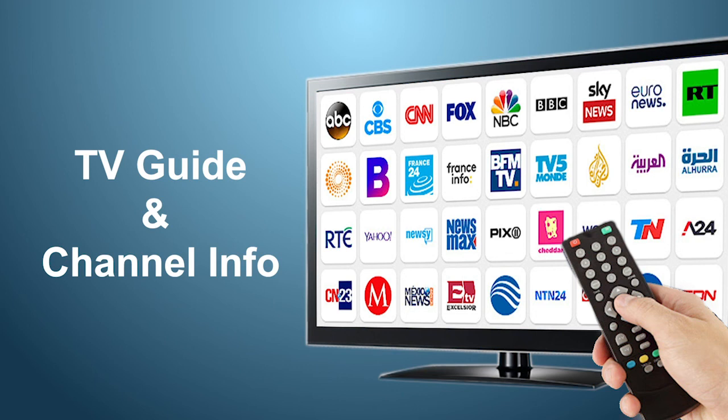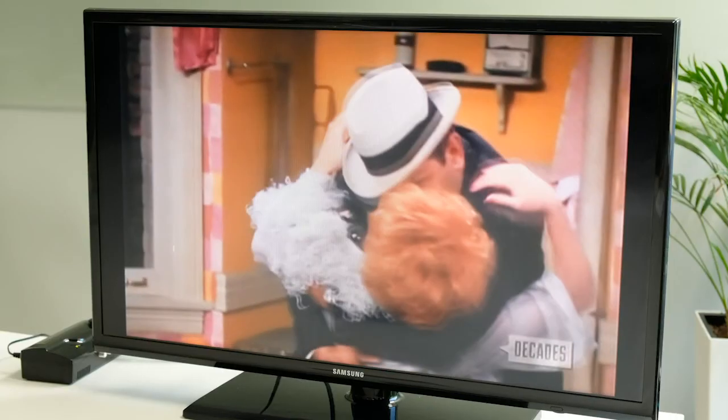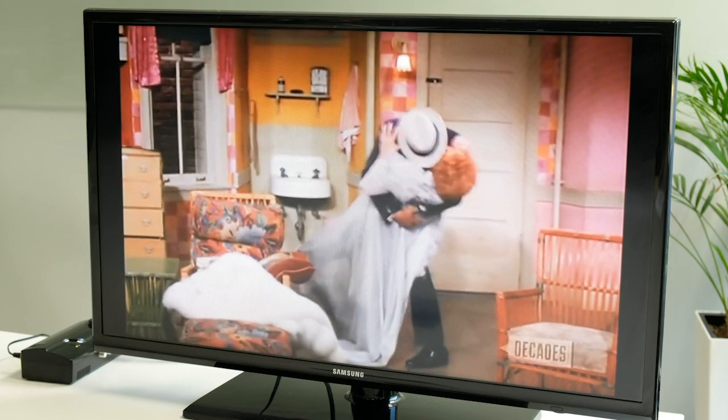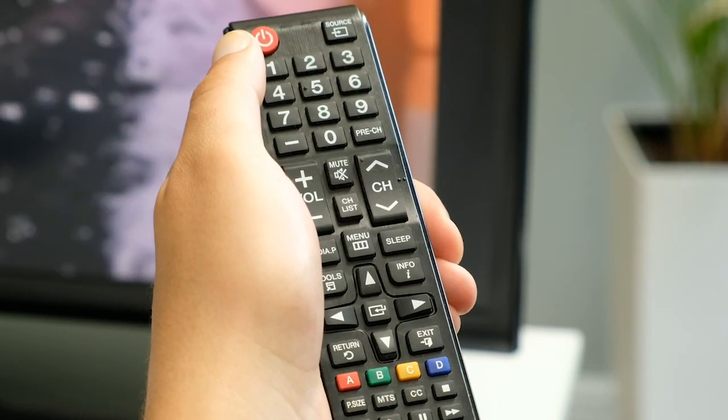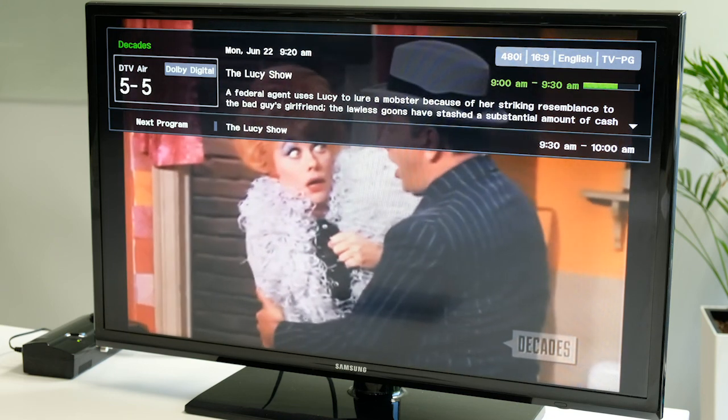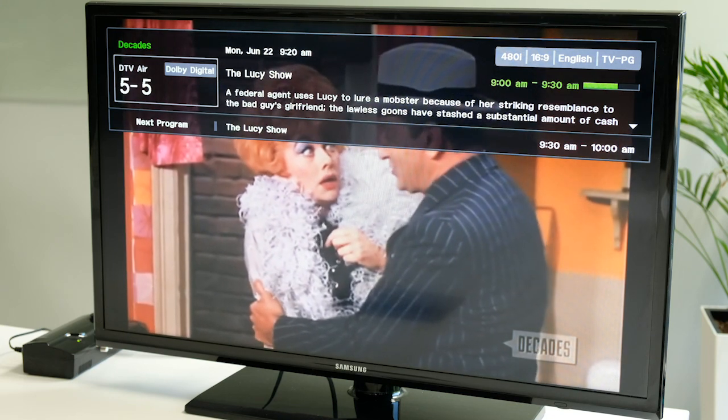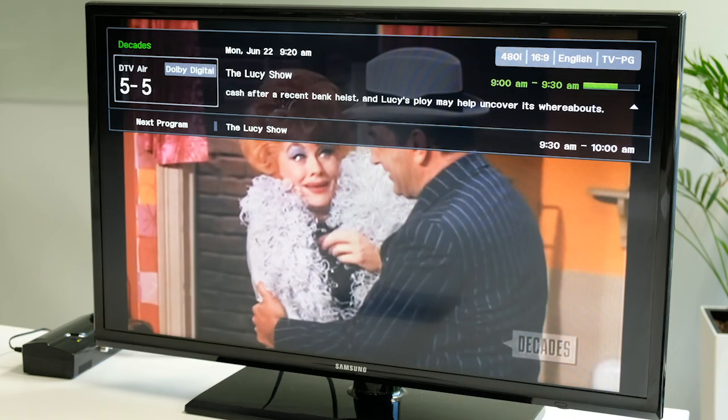In this section, we will show you how to set up TV Guide and Channel Info. To find out what is playing on that channel, depending on your TV brand, click the Info button on your remote and a window will come up on your TV, showing the current TV show that's playing along with a short description and time.